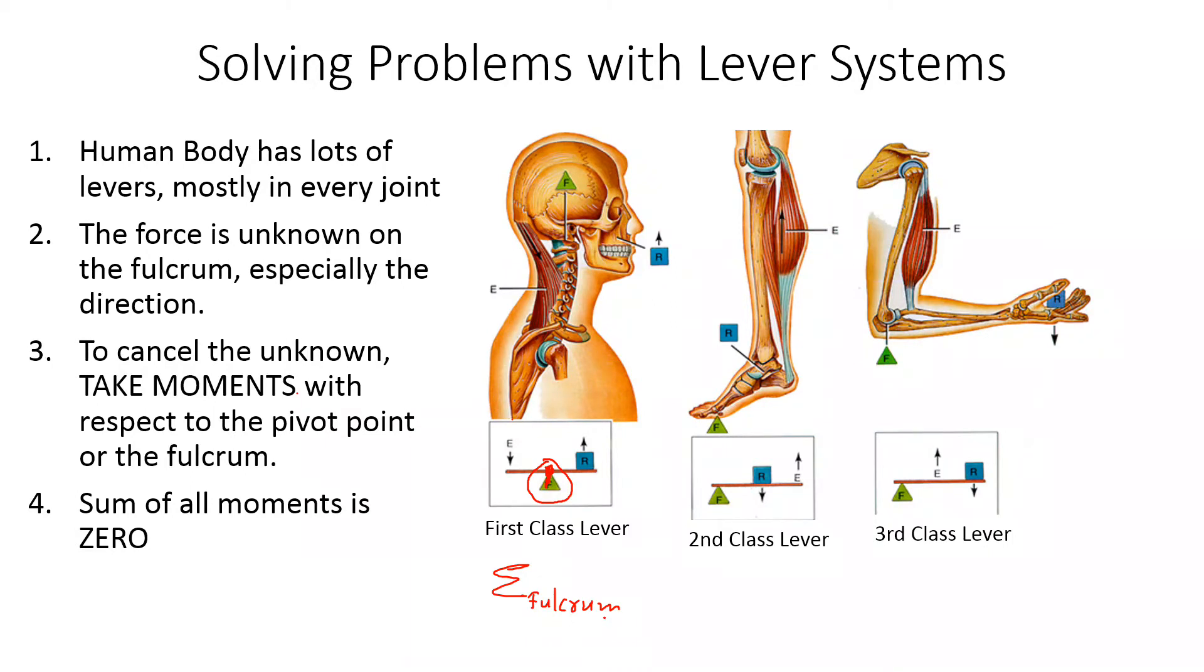they're the same thing. Then you do summation of all moments with respect to the fulcrum. You can typically assume clockwise or counterclockwise as positive moment. If we sum all of these to zero, then you can solve the unknown. So for